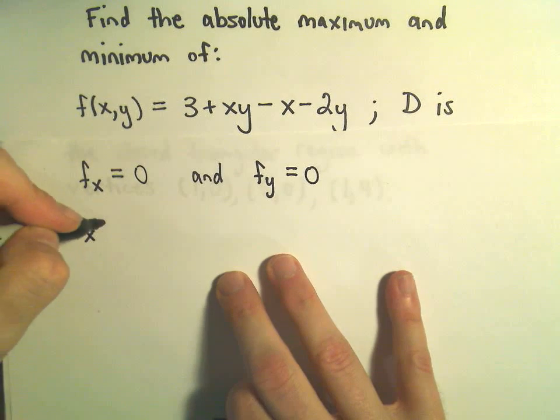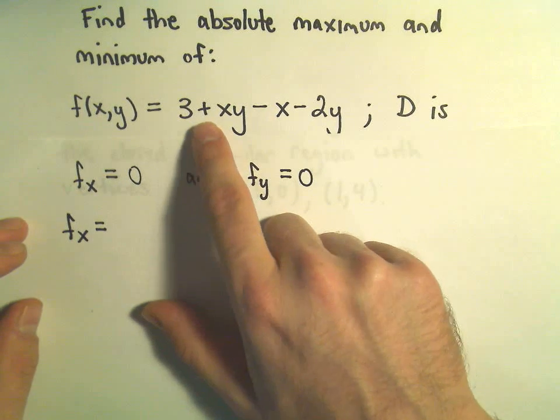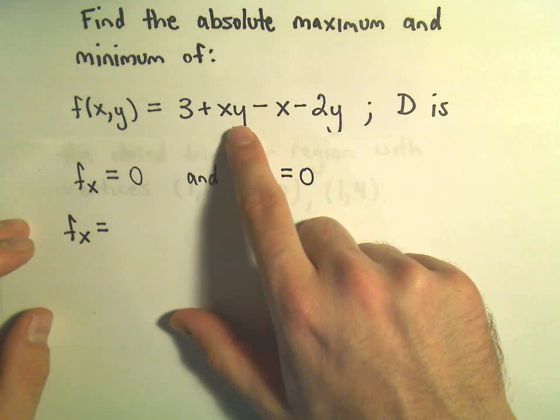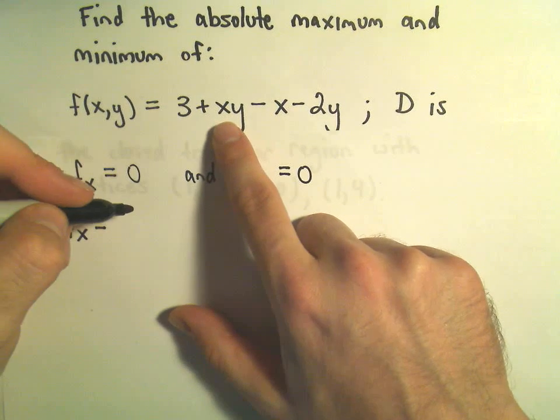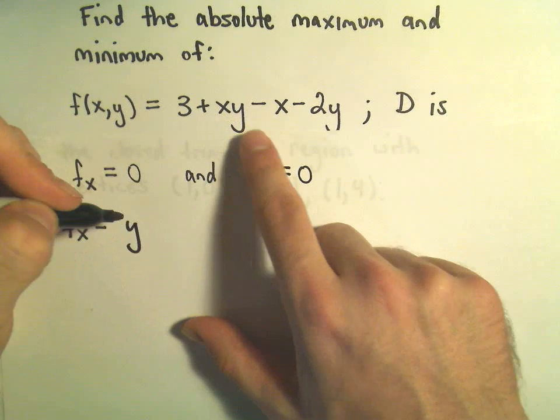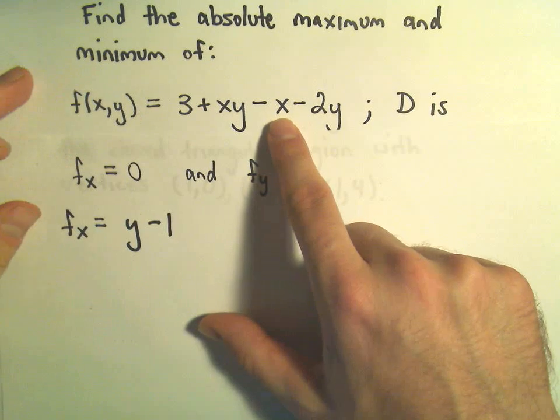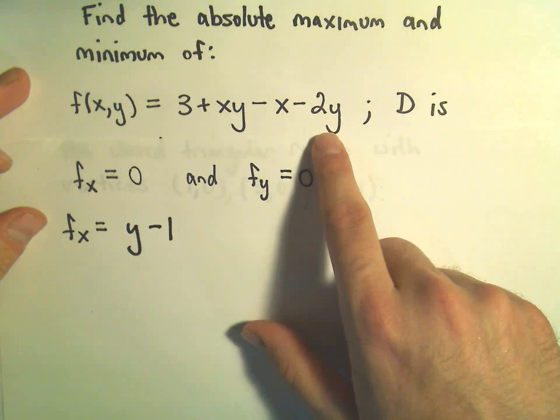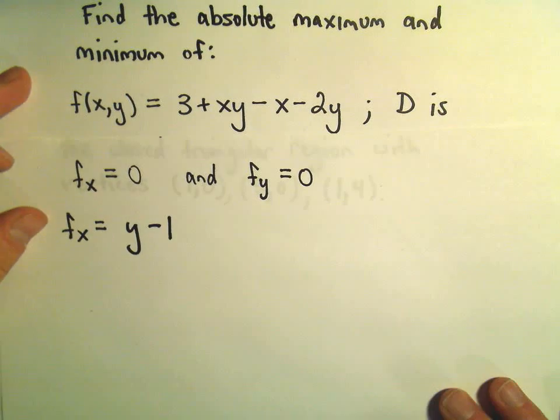The first thing I'm going to do is take the partial derivative with respect to x. So 3 is just a constant so that goes away, the derivative of x times y, we're treating y like a constant so our derivative would simply be y. If we take the derivative of negative x that'll leave us with negative 1, and the negative 2y term goes away.